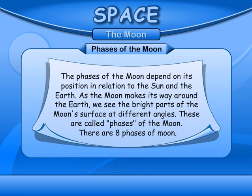Phases of the Moon. The phases of the Moon depend on its position in relation to the Sun and the Earth. As the Moon makes its way around the Earth, we see the bright parts of the Moon's surface at different angles. These are called phases of the Moon. There are 8 phases of the Moon.